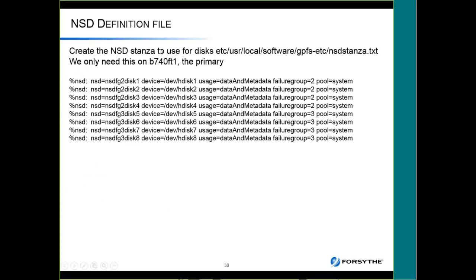Now we define our disks. I had hdisk 1 through 4 in failure group 2 and wanted to mirror them to hdisks 5 through 8 in failure group 3. I'm renaming the disks in a stanza file — for example NSD_FG2_disk1 maps hdisk1, and NSD_FG3_disk5 maps hdisk5. I did both data and metadata on the same disks for simplicity. I tried to make the NSD name match a combination of the failure group and the hdisk name to make things simpler.